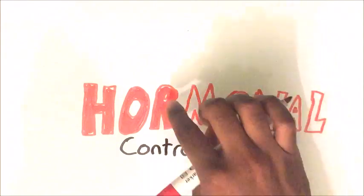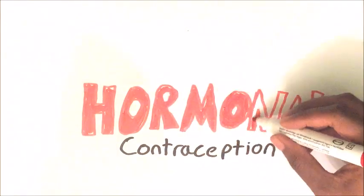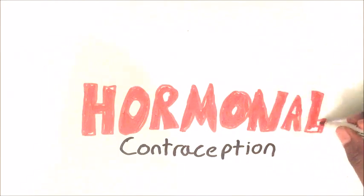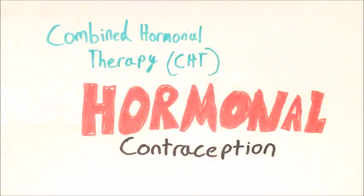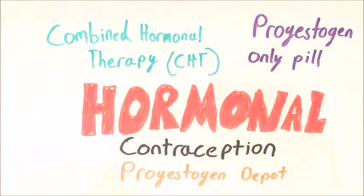Hormonal contraception methods are very effective at preventing pregnancy. They are broadly divided into three groups: combined hormonal therapy, progestogen as a tablet, and progestogen as a depot.